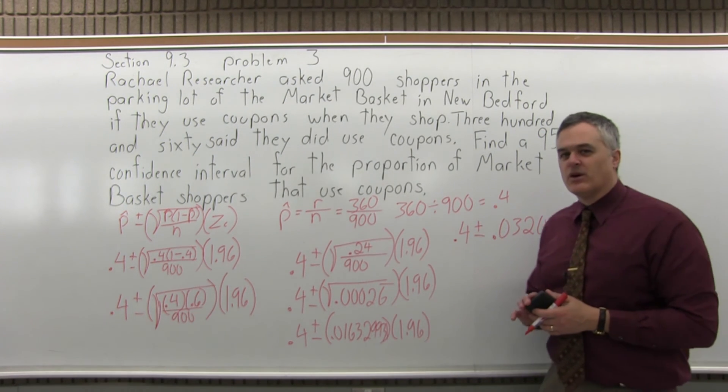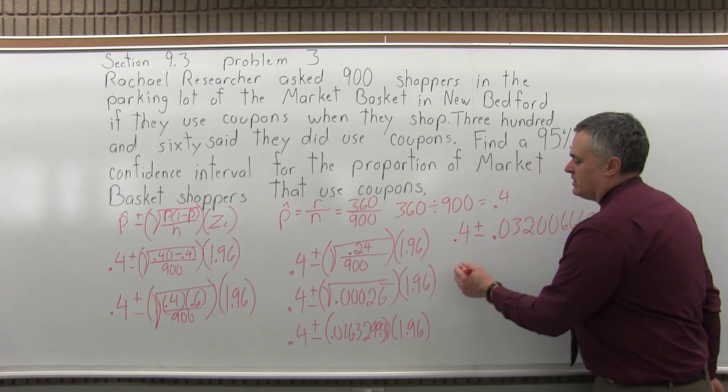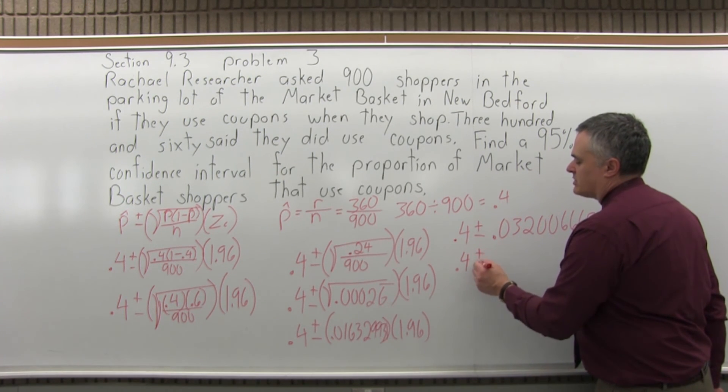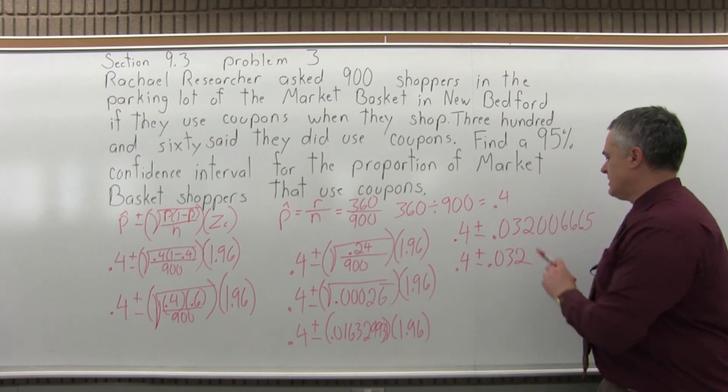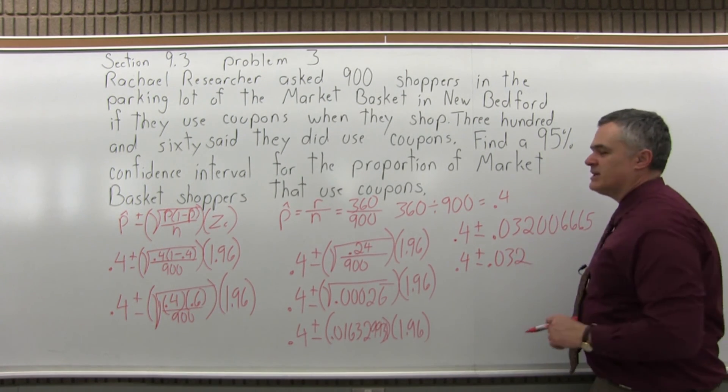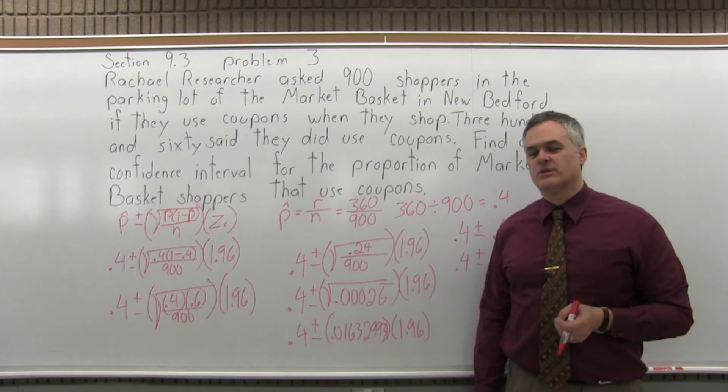We can round that off a little bit. So I'll do 0.4 plus or minus, let's call it 0.032. With any type of sensible round off, we'll call it 0.032.